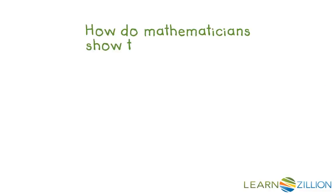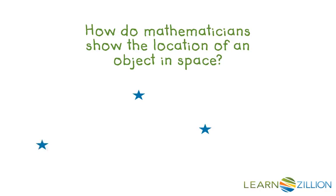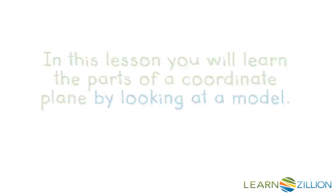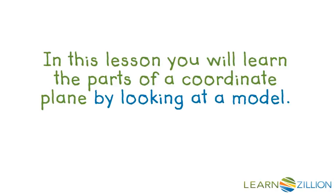How do mathematicians show the location of an object in space? When people design cities, they need to think about where houses will be in relation to schools and libraries. How do they describe these things so that it makes sense to other people? In this lesson, you will learn the parts of a coordinate plane by looking at a model.